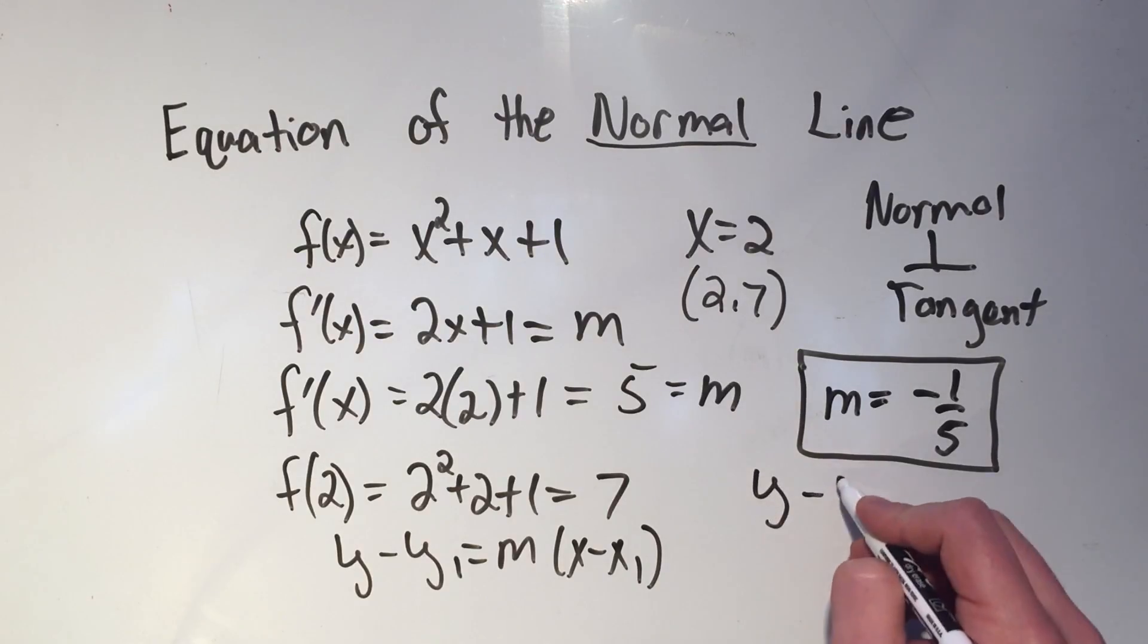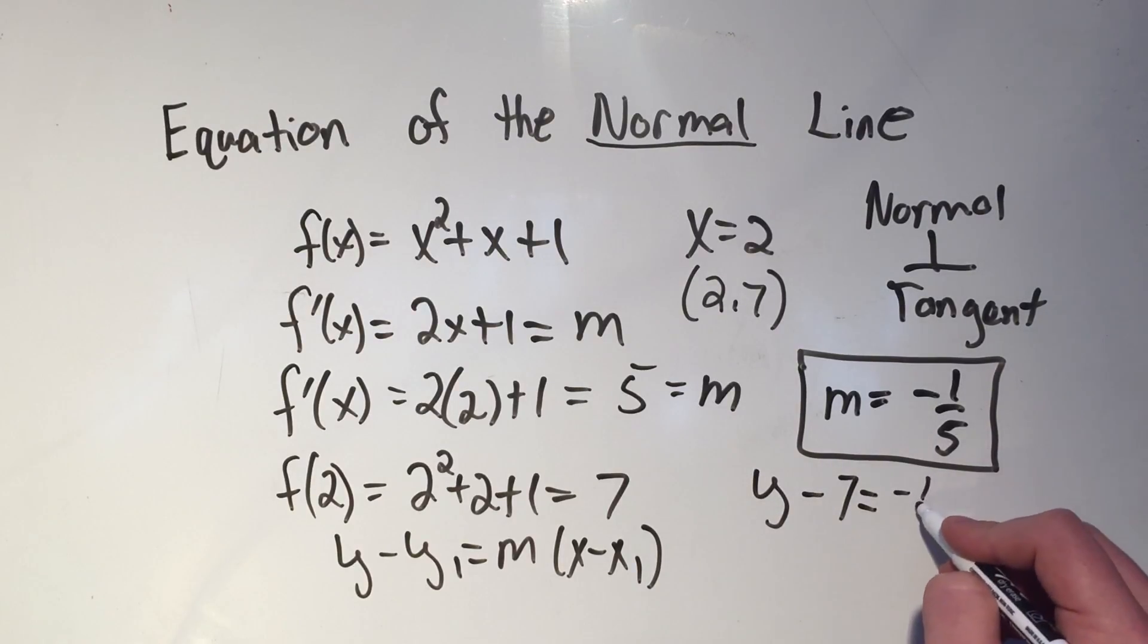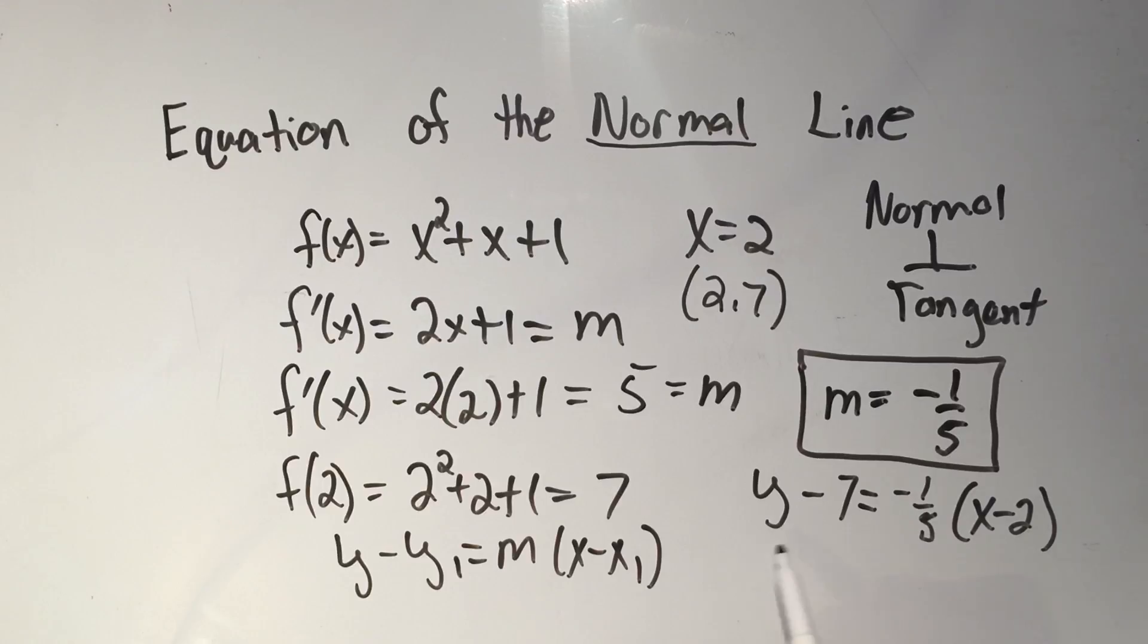So that's y minus 7 equals minus 1 fifth x minus 2. And you could distribute that 1 fifth and add the 7 to put it in y equals mx plus b. I'm not even going to bother doing that.